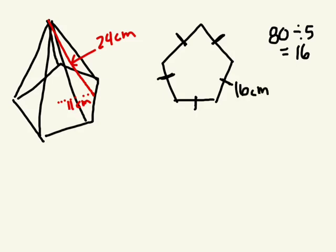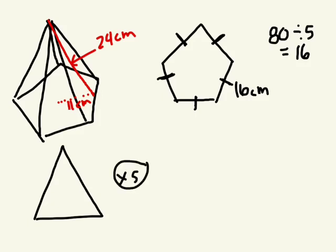And what other shapes make up this pentagonal pyramid? Five triangles, right? Do you know any of the dimensions of the triangle that we need to know to find the area? Good, we know the height is what? 24 centimetres.